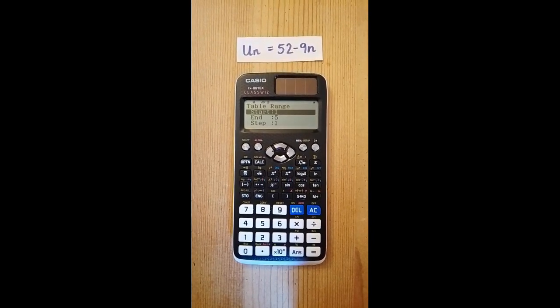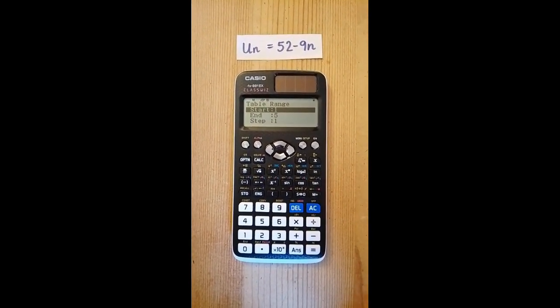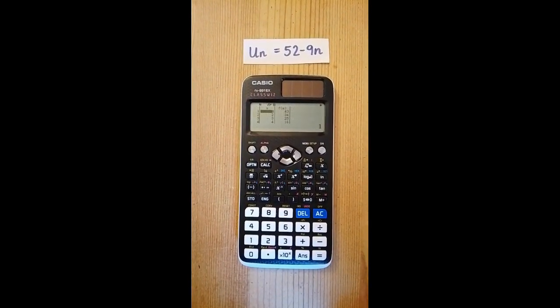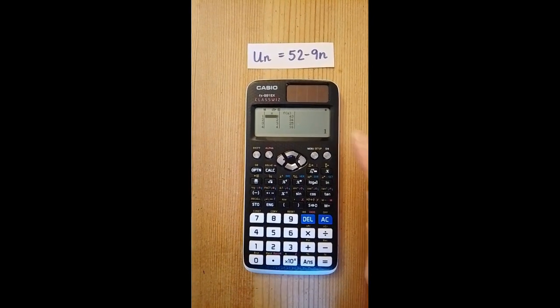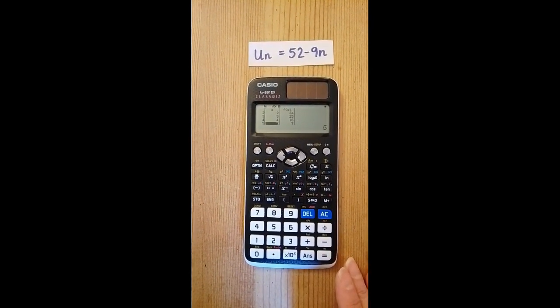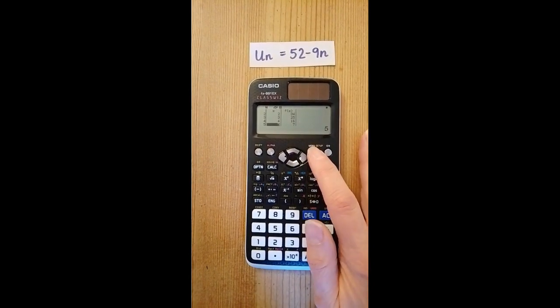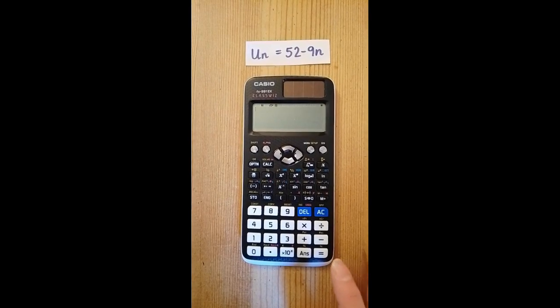The default settings shown here ask the calculator to generate the first five terms of the sequence. Press equals to choose these. You now have a table of values for the sequence, and you can scroll down to access them all. When finished, press menu 1 to return to calculate mode, and that's it.